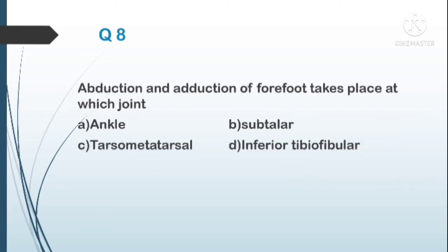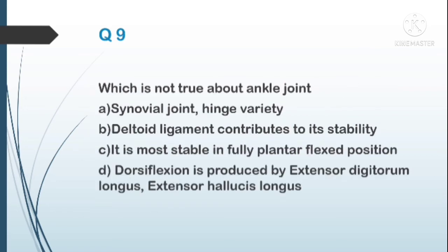Question number eight: abduction and adduction of the forefoot takes place best at which joint? A) ankle, B) subtalar, C) tarsometatarsal, D) inferior tibiofibular. The answer is the subtalar joint.